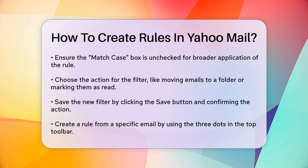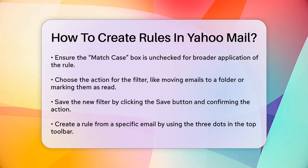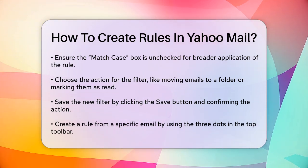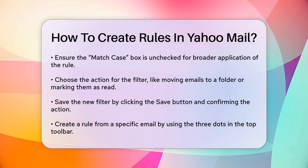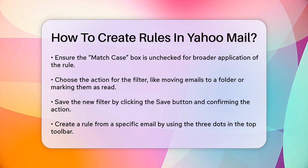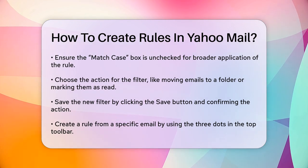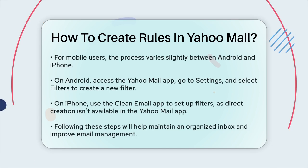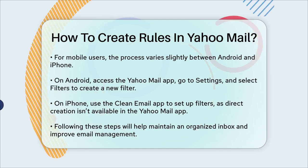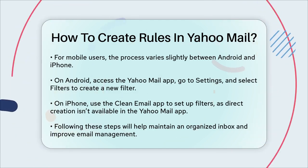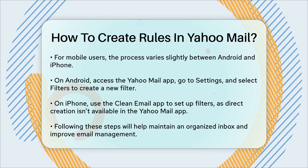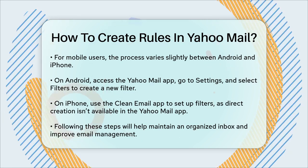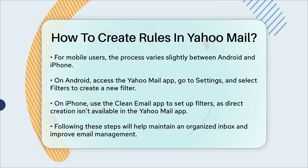For mobile users, the process is a bit different. On Android, open the Yahoo Mail app, tap your profile icon, select Settings, and then choose Filters in the General section. Tap the plus sign to create a new filter, add the filter name and details, and choose where to move the messages. Tap the checkmark to save the filter.